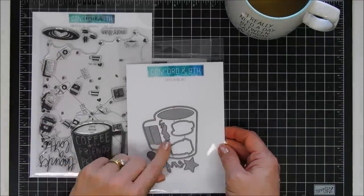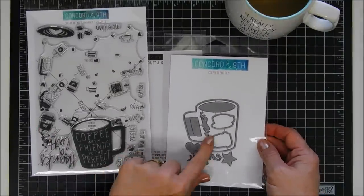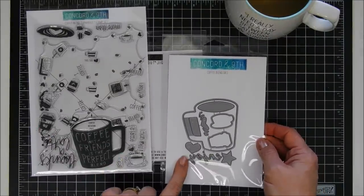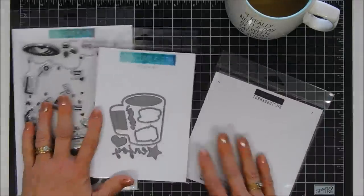It does have a coordinating die set that cuts out that cute little coffee mug, the word enjoy, and the two smaller coffee cups. The stamp set's not just a turnabout—it has a large coffee mug and a lot of sentiments, coffee beans, and extra coffee cups.